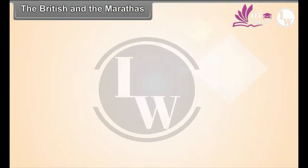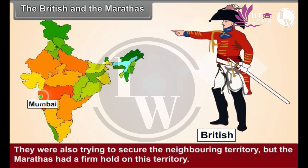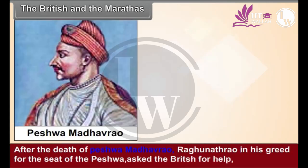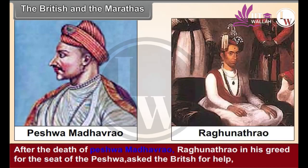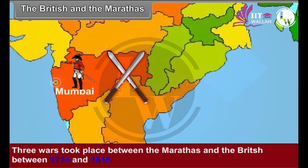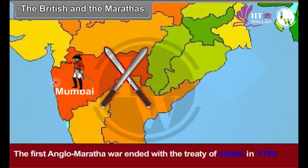The British and the Marathas. Mumbai was the chief centre of the British in western India. They were also trying to secure the neighbouring territory, but the Marathas had a firm hold on it. After the death of Peshwa Madhav Rao, Raghunath Rao, in his greed for the seat of the Peshwa, asked the British for help. Thus, the British entered Maratha politics. Three wars took place between the Marathas and the British between 1774 and 1818. The Maratha Sardars faced the British unitedly in the First War and won it. The First Anglo-Maratha War ended with the Treaty of Salbai in 1782.